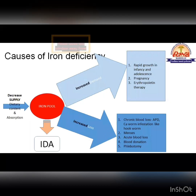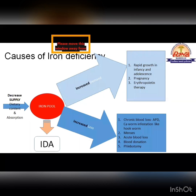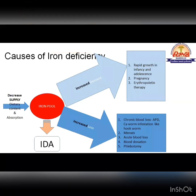Blood donation is also a blood loss — a noble cause, but a loss nonetheless. Repeated blood donation without proper supplementation can lead to iron deficiency anemia. Phlebotomy — drawing blood from veins, used as treatment in polycythemia vera — also results in blood loss. Losing blood anywhere means losing iron, and if repeated many times, it can lead to iron deficiency anemia.